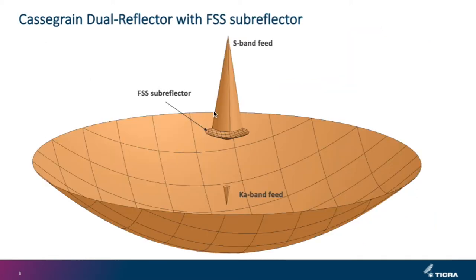Let us consider the classical S-KA band Cassegrain dual reflector system with the FSS subreflector. We have the S-band feed above the subreflector and the KA-band feed below. This means that the FSS subreflector needs to reflect in KA-band and to be transparent in S-band. In our specific case, the main reflector has a diameter of 2 meters and the subreflector has a diameter of 0.28 meters. Now, ideally, the surface of the subreflector is a hyperboloid, but the doubly curved surface complicates manufacturing, and a singly curved surface is actually preferred because it eases the manufacturing process.